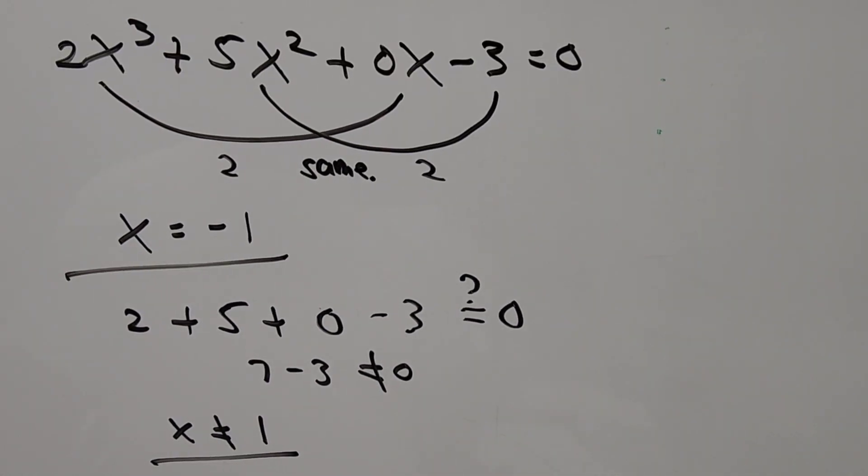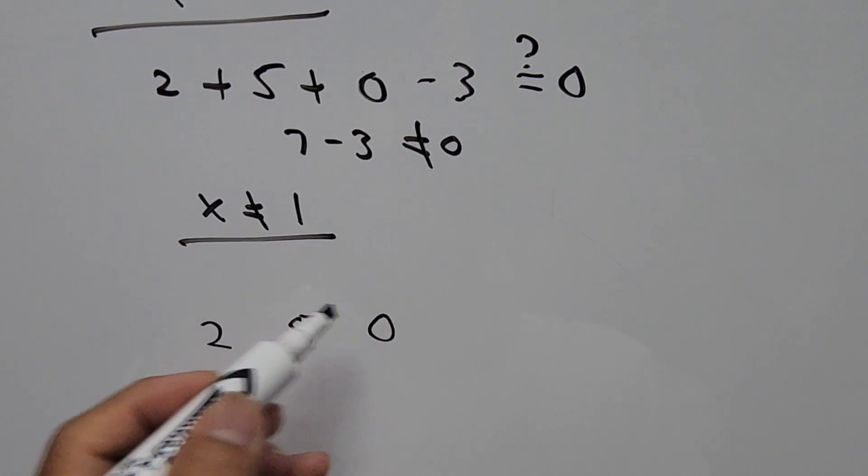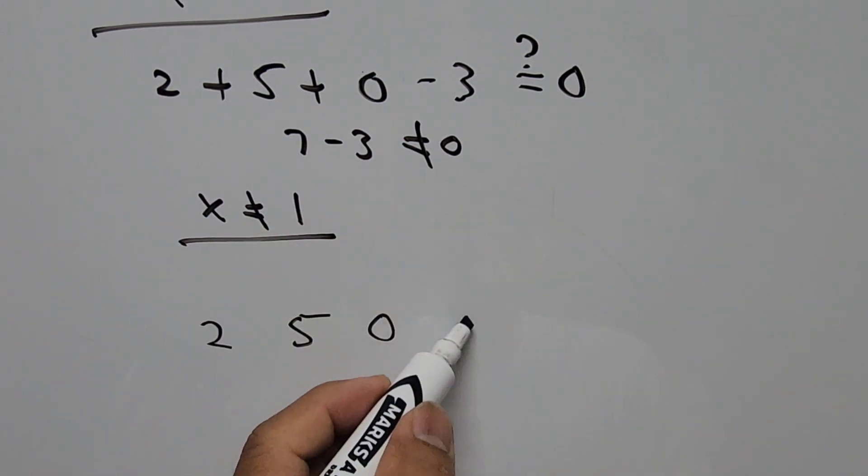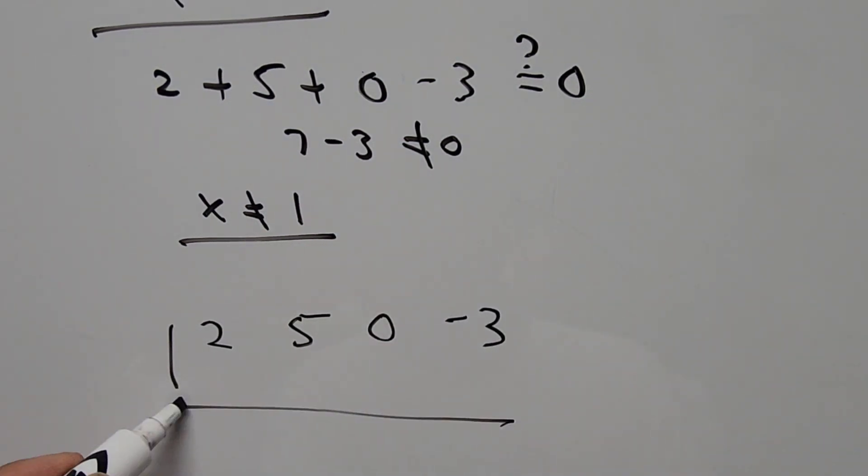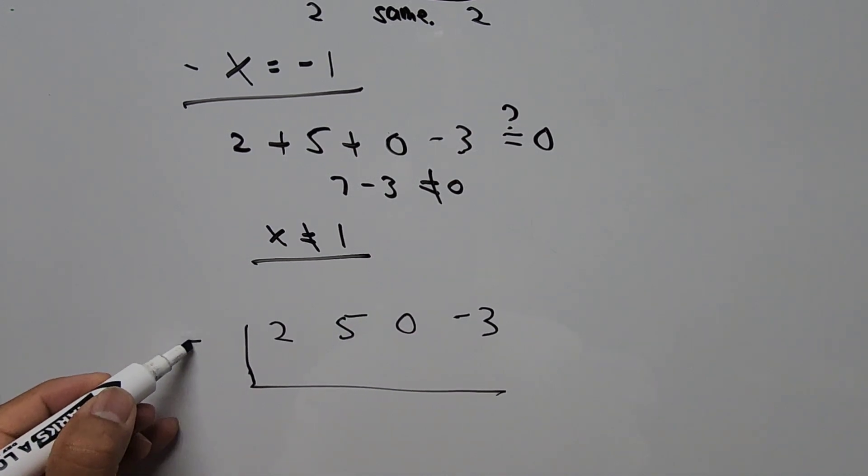To find the other factor of our equation from here is to do synthetic division. So in doing synthetic division, we have to collect all those coefficients of the terms of the cubic equation. So the first term is 2, it's positive. Second term is 5. Third term is 0. And the next term is -3. And we have the first value of x, that is -1 from here. So we have -1 on here.